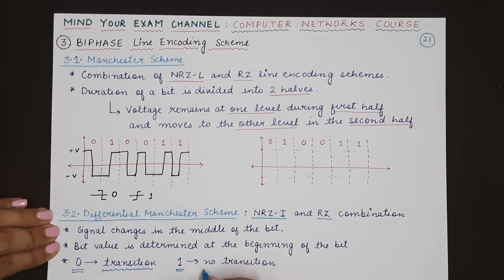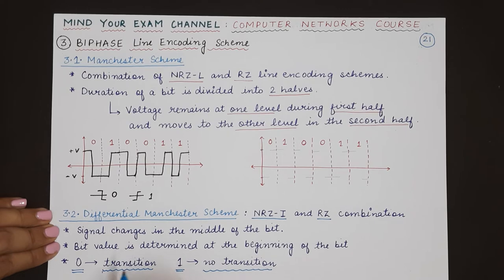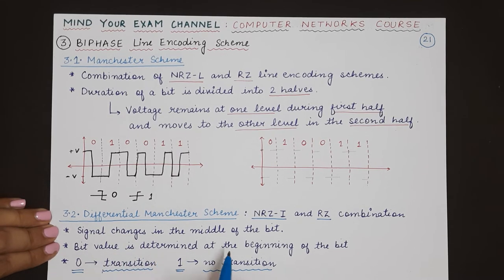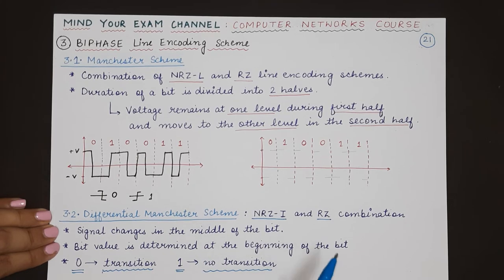Whether there is a transition or not, at the middle of the bit duration you will change the voltage. The bit value is determined at the beginning of the bit and then changed in the middle.